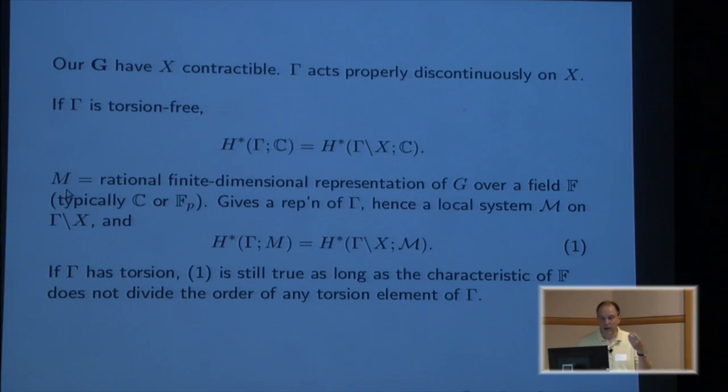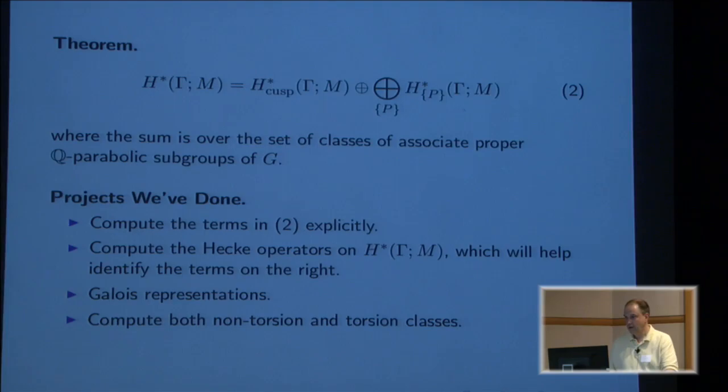I'll always be taking my G so that the symmetric space is contractible, and gamma acts properly discontinuously on X. If gamma is torsion-free, then X mod gamma is a K(π,1), and so the group cohomology of gamma is the cohomology of the topological space X mod gamma. If you're in that setting, you can also get local systems going, so let M be a finite dimensional representation of G over a field F. If gamma is not torsion-free, equalities like this are still true, as long as the characteristic of F doesn't divide the order of any torsion element of gamma.